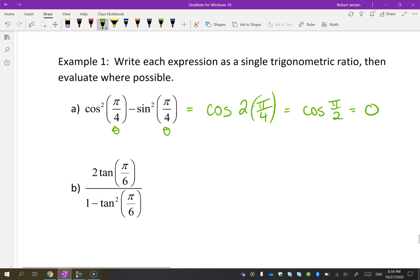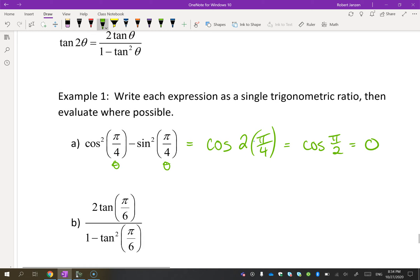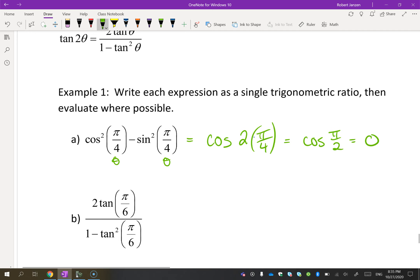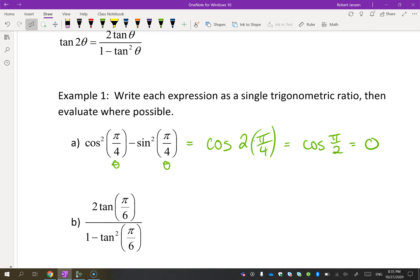This one's a bit of a giveaway. Obviously it's the tan formula. If you think of this as being theta, then this is tan of 2 theta. Except it's not theta, it's π/6. So this is tan of 2π/6, which is tan π/3, and we know that's root 3.